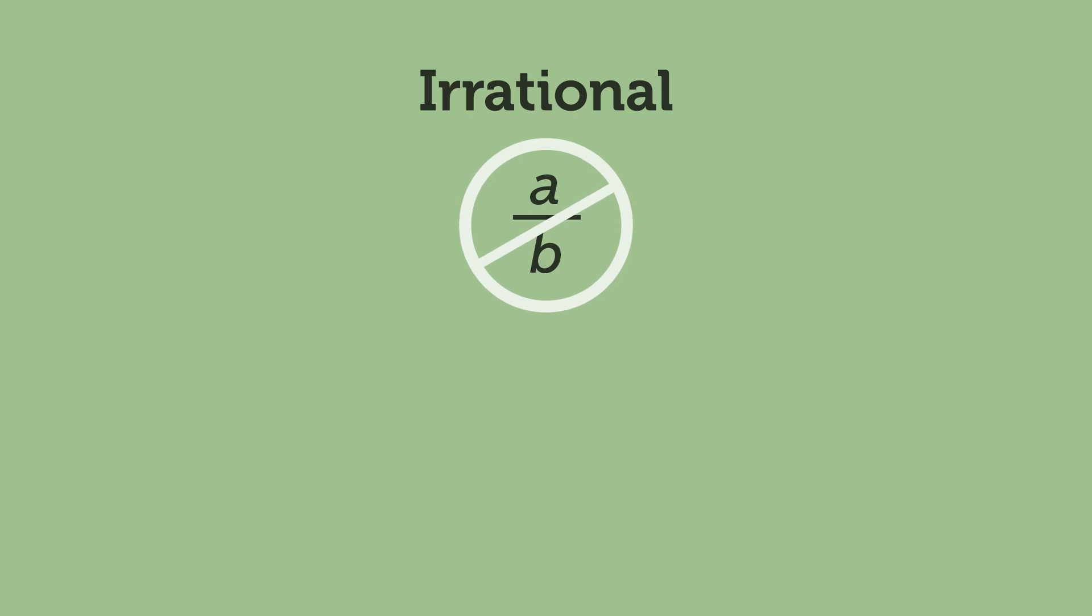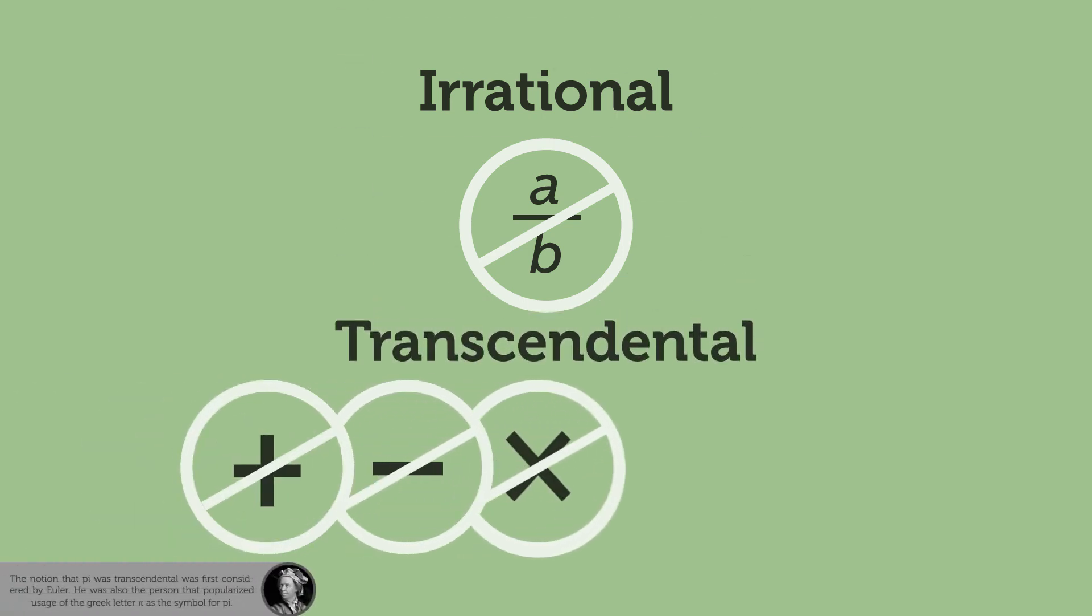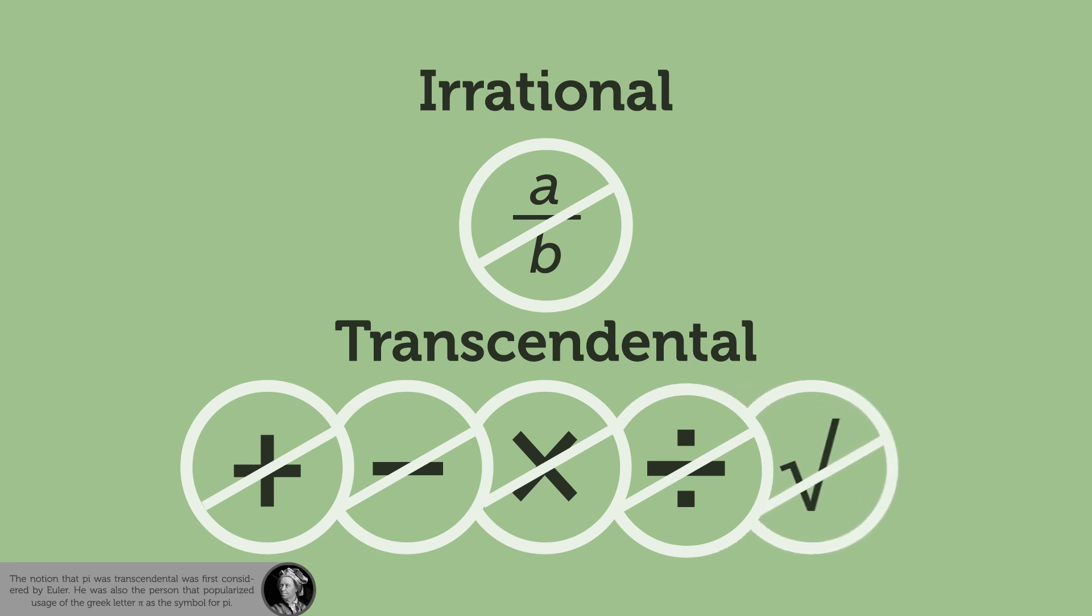It is an irrational number, which means that it cannot be represented by a fraction and goes on forever. But, more than that, it is a transcendental number, which means that it cannot be found through any combination of the five algebraic operations we know and love.